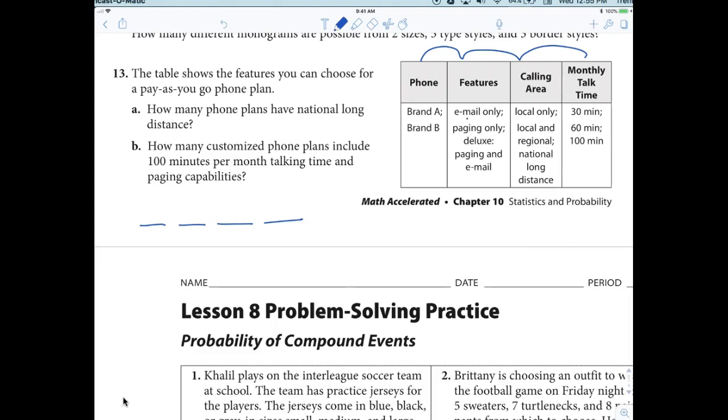Now, keep in mind, I'm doing A. Does this column have anything to do with the long distance? No. So you have how many choices? Three. The calling area is where you want the national long distance. And how many of those have national long distance? One. Could you choose any of the other ones? No. You have one option there because you want to be able to use the national long distance. Anybody agree with that?